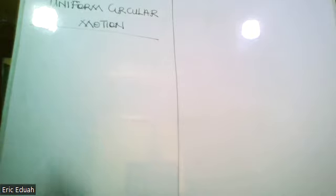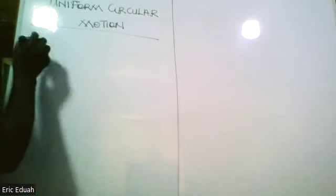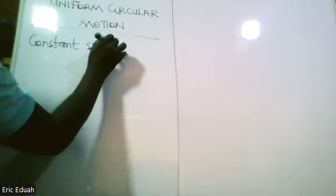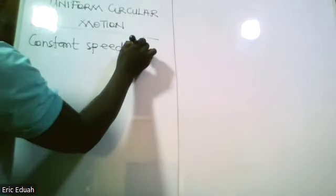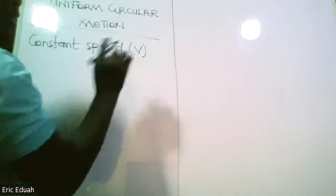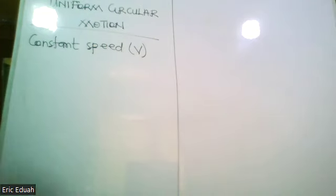A body in uniform circular motion moves with a constant speed v. Please note: constant speed, not constant velocity. They are not the same thing.